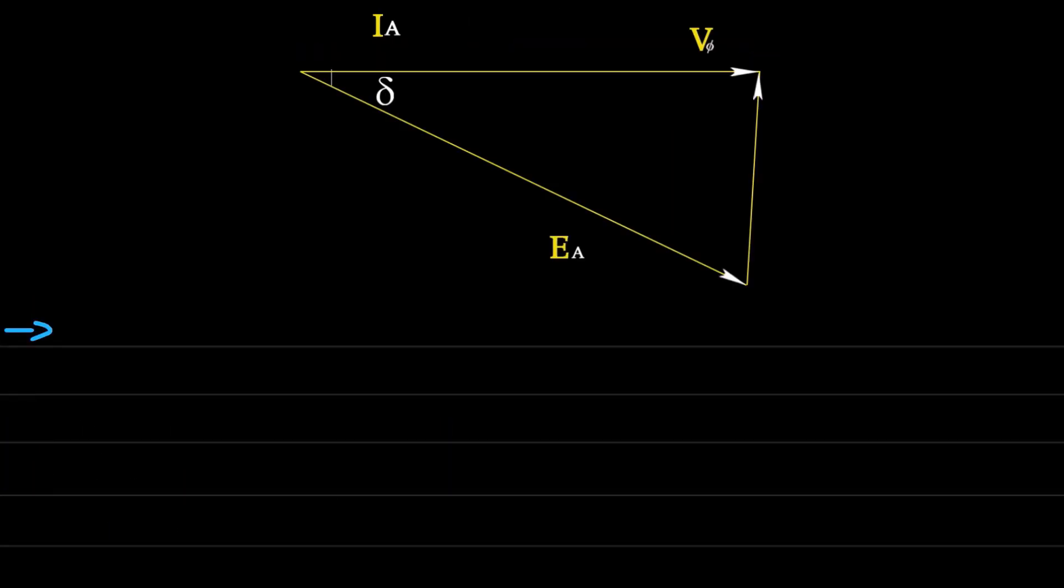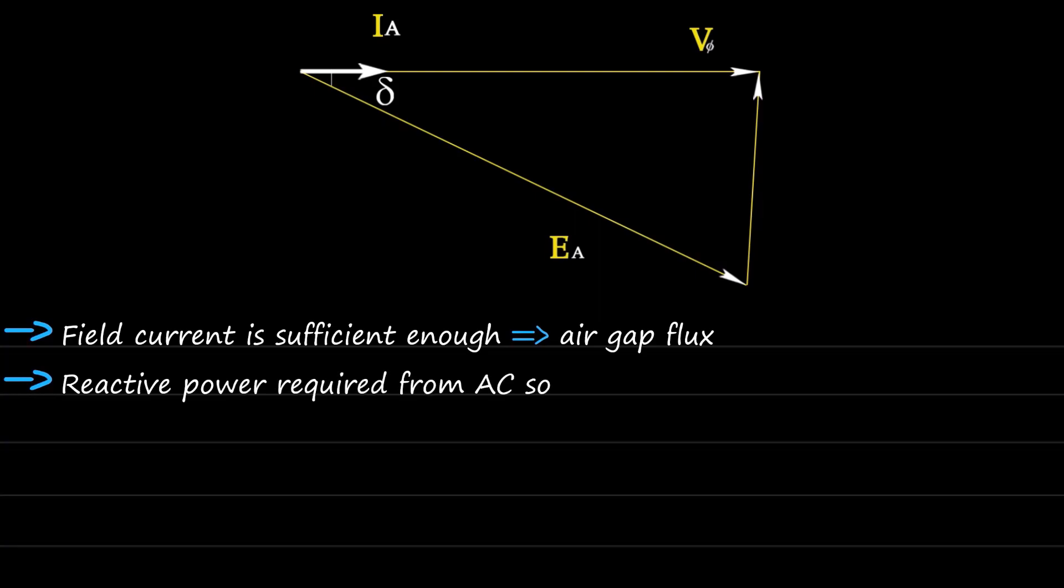Now, what happens if the field current is sufficient enough to produce the air gap flux? In such case, the magnetizing current or reactive power required from an AC source is zero. The motor is said to be operating at unity power factor, and excitation is sufficient.